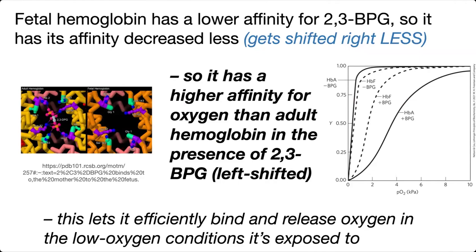Another key thing about 2,3-BPG is that fetal hemoglobin has a lower affinity for it than adult hemoglobin does, and therefore it's going to be less affected by BPG. You get a smaller shift when you add BPG to fetal hemoglobin versus when you add it to adult hemoglobin.